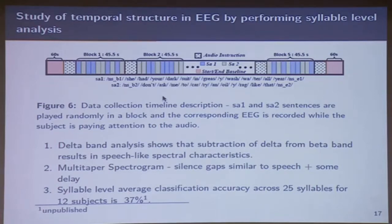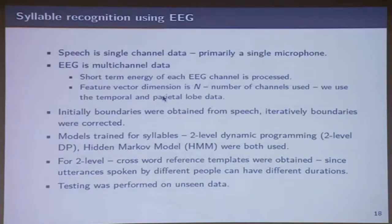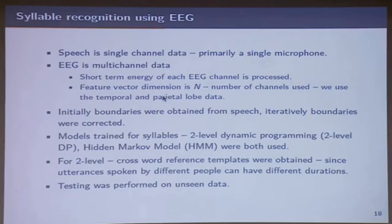We did syllable-level average classification accuracy across 25 syllables for 12 subjects — this is unpublished work — and we got an accuracy of 37%. Speech is single-channel data, primarily a single microphone, whereas EEG is multi-channel data with 128 channels. We played the speech signal and collected the EEG signal simultaneously. We did a short-term energy on each EEG channel, created a feature dimension of N with the number of channels used, and used the temporal and parietal lobes.